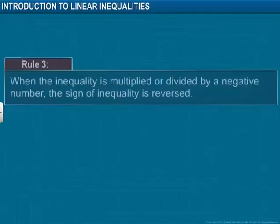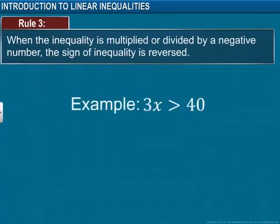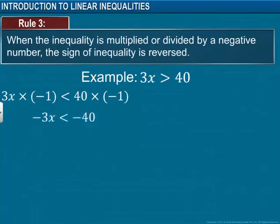It has to be noted that when the inequality is multiplied or divided by a negative number, the sign of inequality is reversed. For example, let's multiply both sides of the inequality by minus 1. Similarly, the sign of the inequality changes when divided by a negative number on both sides.